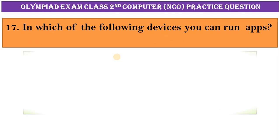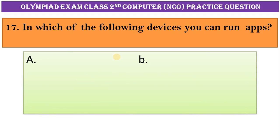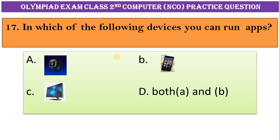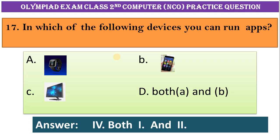Question seventeen: in which of the following devices you can run apps? A, smartwatch. B, mobile. C, monitor. D, both A and B. Correct answer is option four, both A and B.